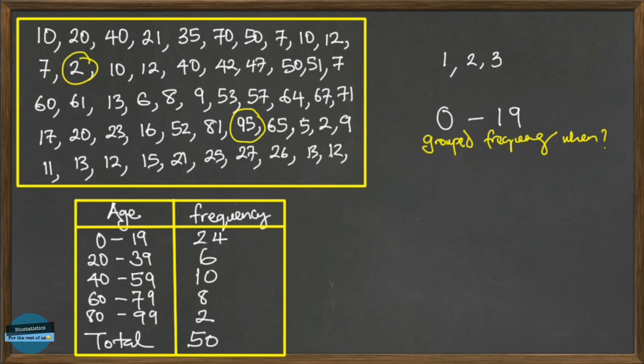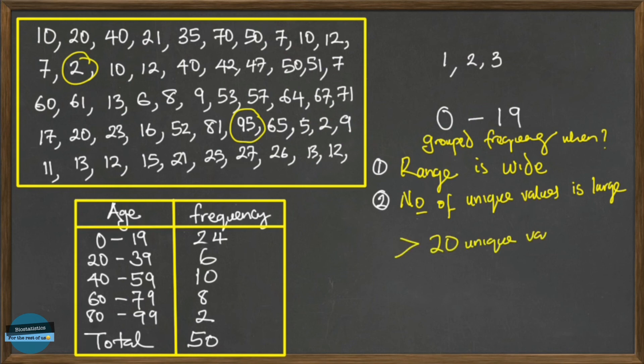So in summary, when do you use a grouped frequency distribution? You use the grouped frequency when the range of values is wide and then the number of unique values is large. In this our case you can see we have large number of unique values. Now as a rule of thumb, when you have greater than 20 unique values, then it's not advisable you use an ungrouped frequency. But when you have unique values that are greater than 20, then you use it.